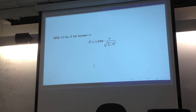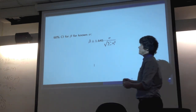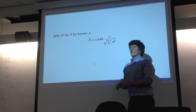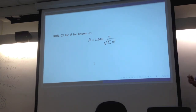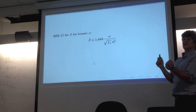Lastly, suppose we want to set up a 90% confidence interval for beta. We want an interval that gives some estimator for beta.